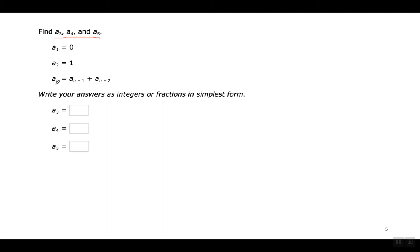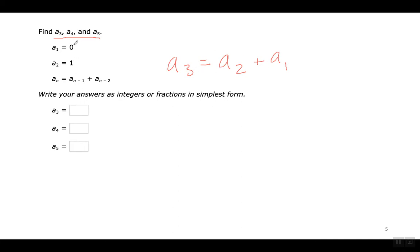Let me first find the third term by substituting 3 wherever n is. Voy a encontrar el tercer término substituyendo el número 3 donde quiera que esté la letra n. When I do that, I'm going to get: A3 equals A2 plus A1. That'll be the formula. So A3 equals A2 plus A1 — uno más cero is 1.